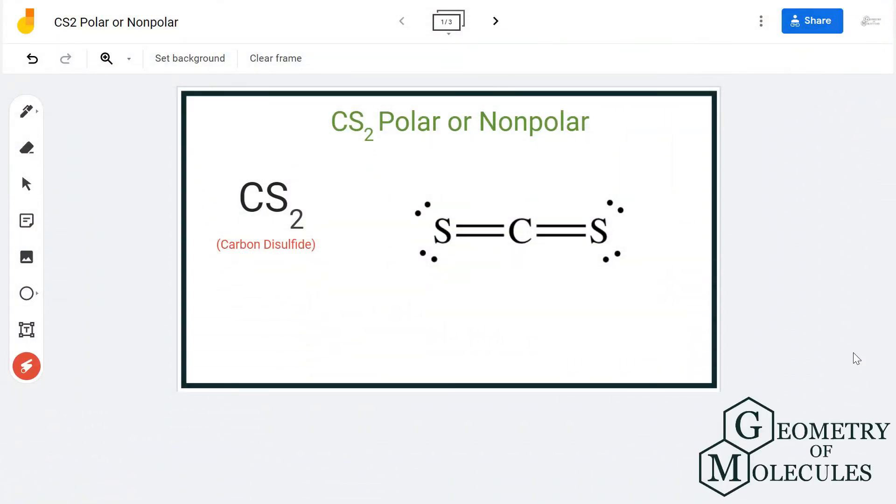Hi guys, today in this video we are going to determine the polarity for the CS2 molecule. It's the chemical formula for carbon disulfide. To understand its polarity, we will first look at its Lewis structure.